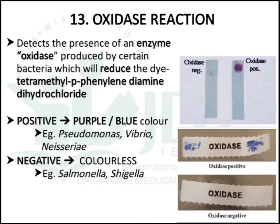The next test is the oxidase reaction, used to detect the presence of the oxidase enzyme produced by certain bacteria. The enzyme reduces tetramethyl-para-phenylene-diamine dichloride. A positive organism gives purple or blue color — examples: Pseudomonas, Vibrio, and Neisseria. A negative organism gives colorless — examples: Salmonella and Shigella.